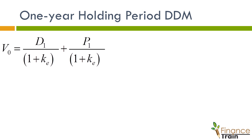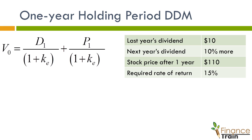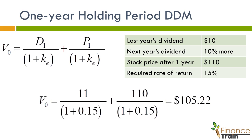Let's take a simple example. Assume that a stock paid $10 dividend last year and the next year's dividend is expected to be 10% higher. At the end of the year, the stock will sell for $110. The investor has a required rate of return of 15%. The value of the stock will be the present value of these cash flows as shown on screen. Note that the dividend paid was $10 last year and the dividend will grow by 10% next year. Therefore, D1 is taken as $11.